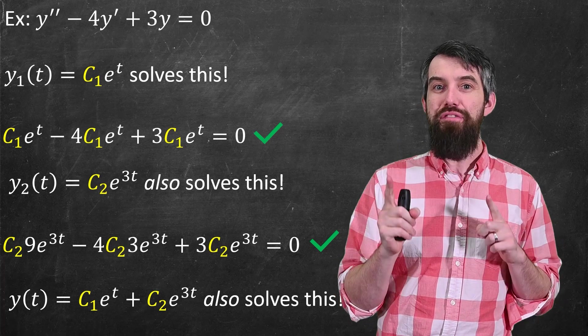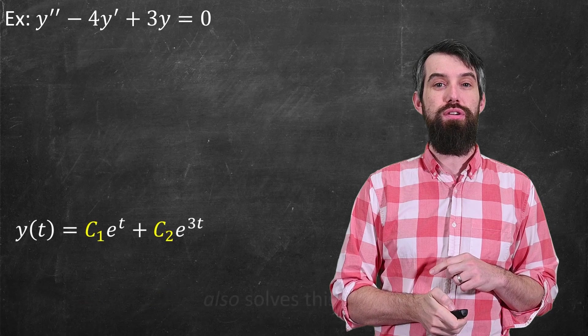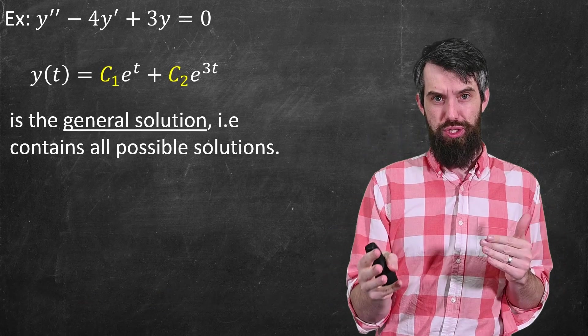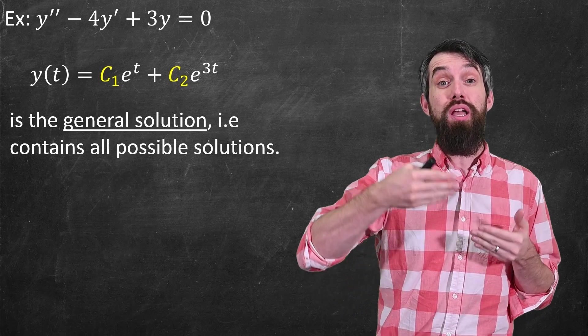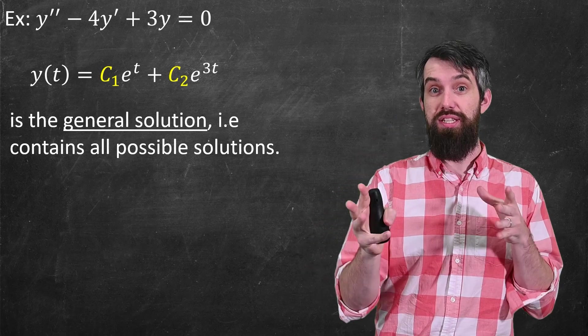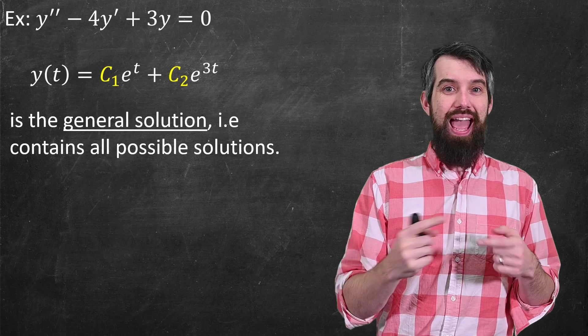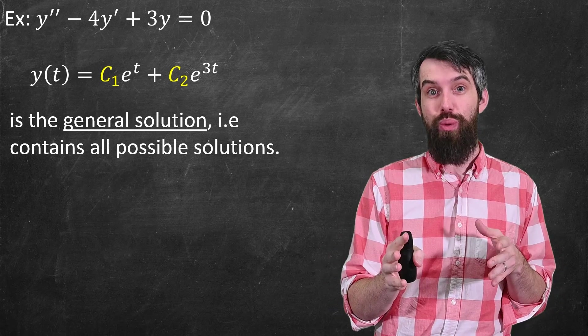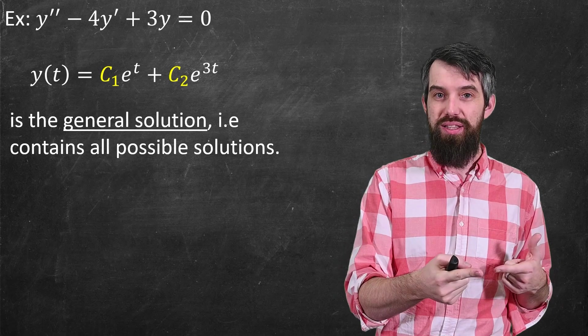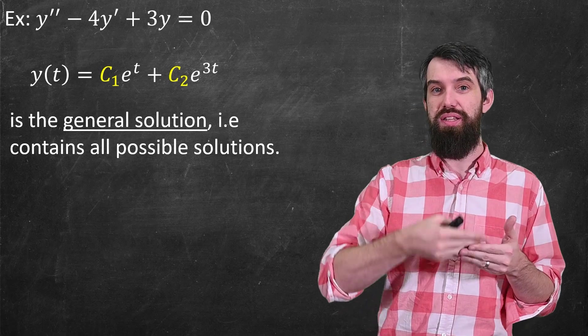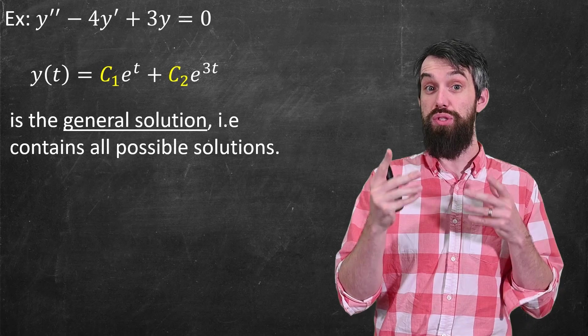And now I've gotten something that I'm going to isolate and refer to as the general solution. The general solution contains every possible solution to this differential equation. That is, any possible solution to this differential equation can be written as the combination of c1 times e to the t and c2 times e to the 3t for different values of those constants.